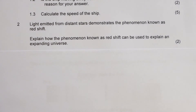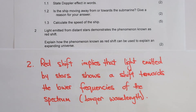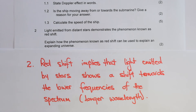Question 2: Light emitted from distant stars demonstrates the phenomenon known as redshift. Explain how redshift can be used to explain an expanding universe. A redshift implies that light emitted by the stars shows a shift towards the lower frequencies of the spectrum — in other words, longer wavelengths. If the perceived frequencies are lower, that means the stars are moving away from the Earth and away from each other, which implies that the universe is expanding.